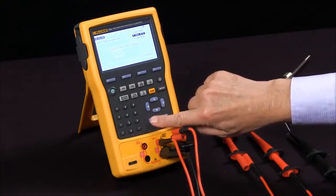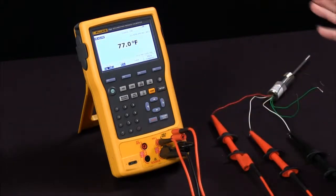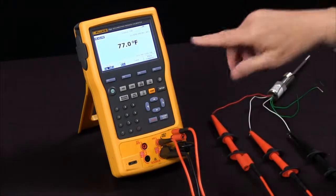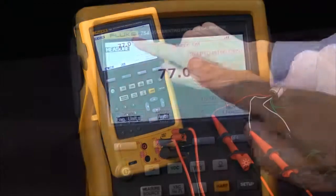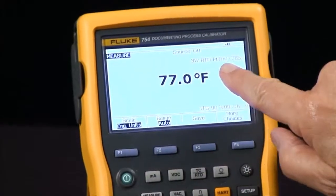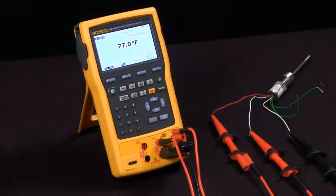So I select three wire and it goes in the measure screen and it measures the RTD that's measuring room temperature here at 77 degrees Fahrenheit. So you see on the screen it says three wire RTD Platinum 100 ohm 385. And that's how we measure an RTD.